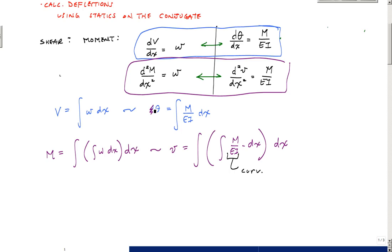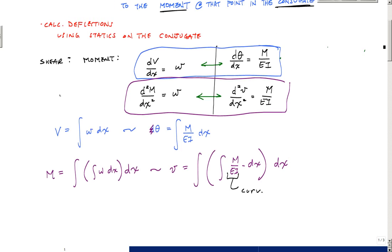There is a conjugate universe — a world where you can take your real beam and translate it into a setup with the curvature loading, and then using just statics, calculate the deflections and slopes.